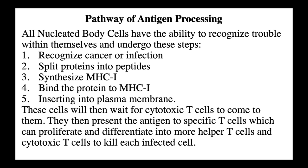What's amazing is that every single one of our own body cells is actively involved in immunity. Every one of our body cells can recognize a cancer cell or an infection. When they ingest it, they split the antigen up into little peptides, but this time they make an MHC1 protein, put it on top of their plasma membrane, and put a little piece of that peptide on top of the MHC1. These cells then wait — because most body cells can't move around — for cytotoxic T-cells to come to them. Then they present the antigen to specific T-cells, which can proliferate and differentiate into more helper T-cells and cytotoxic T-cells to kill each infected cell.